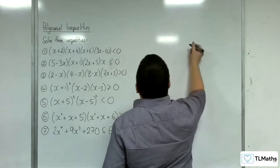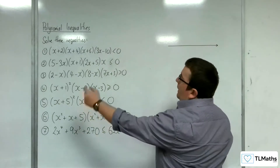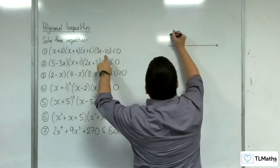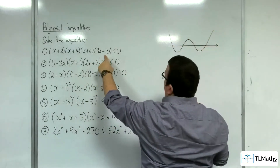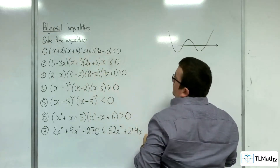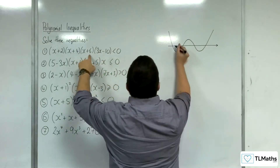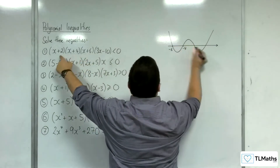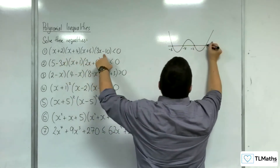Go straight in with a sketch. We are crossing the x-axis 4 times. We start in the top left and work our way to the top right, because we've got a positive x to the 4. So we are crossing through at minus 6, minus 4, minus 2, and 10 thirds.